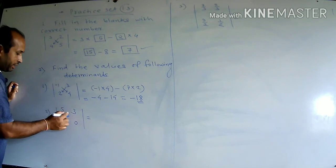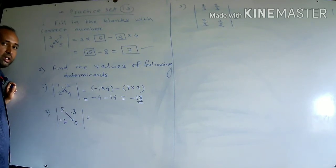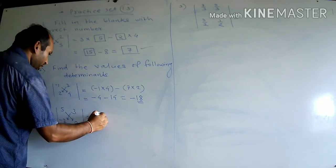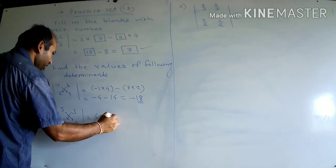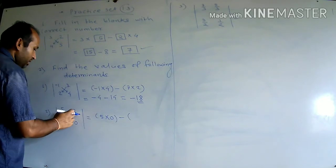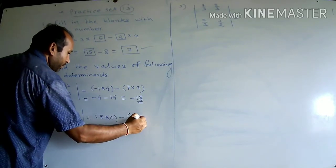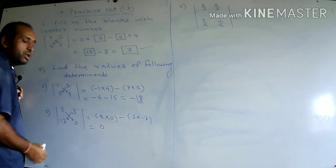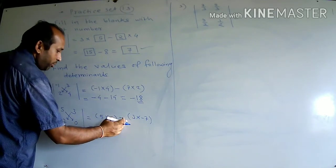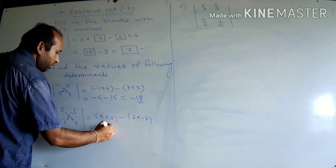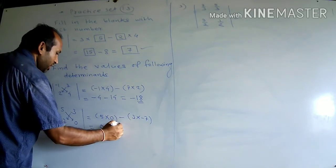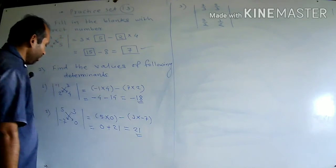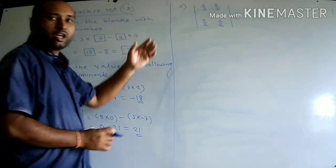Next: take the product of diagonal elements minus product of non-diagonal elements. Its value is 5 into 0 minus 3 into minus 7. Zero into any number is zero, and minus into minus gives plus — so 0 plus 21 equals 21.